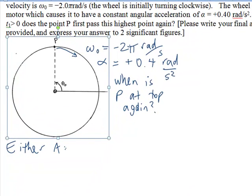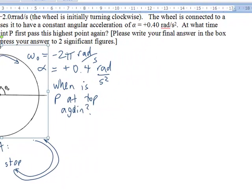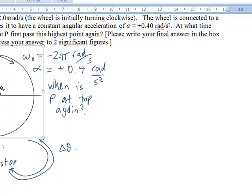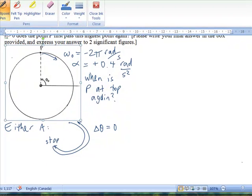Either A, what will happen, is it will, as it's slowing down, it will stop, and then turn around and come back up to point P that way. So delta theta equals zero. That's sort of the more obvious way.